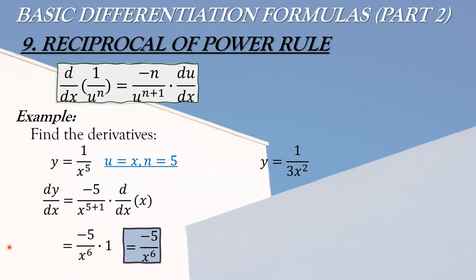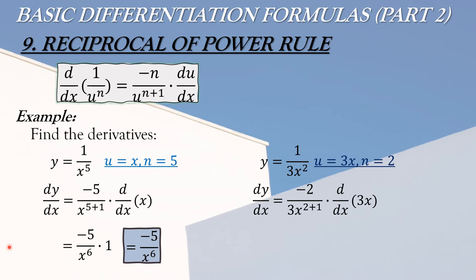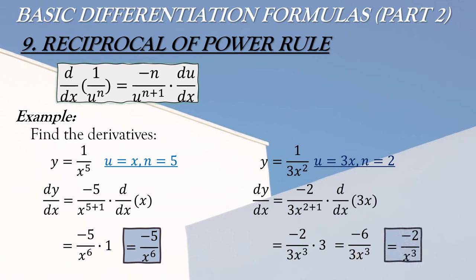Another example: y equals 1 over 3x squared. Ang u natin dito ay yung 3x at ang n ay yung 2. Apply the formula: dy/dx equals negative 2 over (3x) raised to 2 plus 1, times the derivative of 3x. The resulting equation will be negative 2 over 3x cubed, because 2 plus 1 is 3, times the derivative of 3x is 3. I-multiply lang natin ang 3 sa negative 2, kaya magiging negative 6 over 3x cubed. Since kaya i-divide ang negative 6 sa 3, the final answer is negative 2 over x cubed.